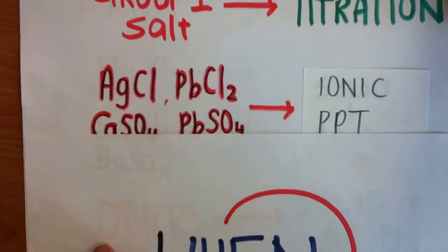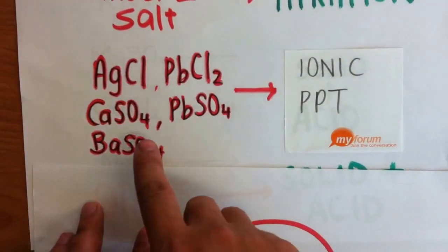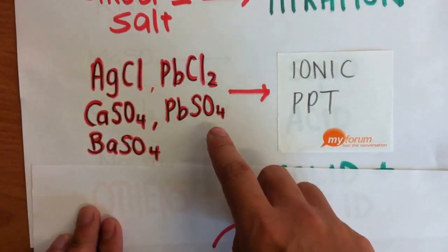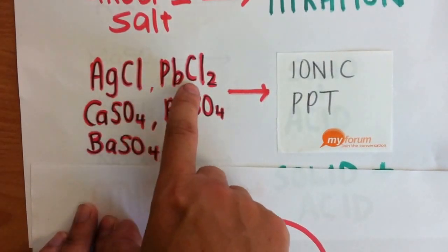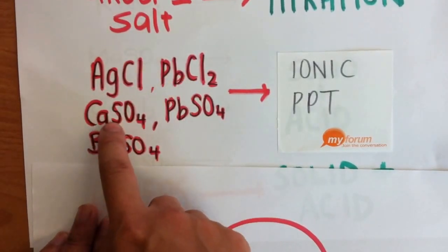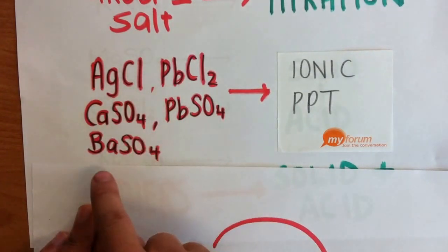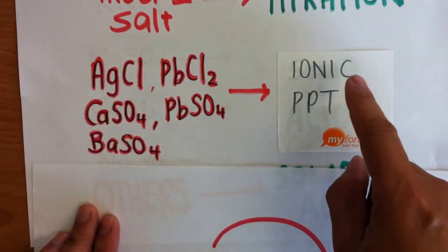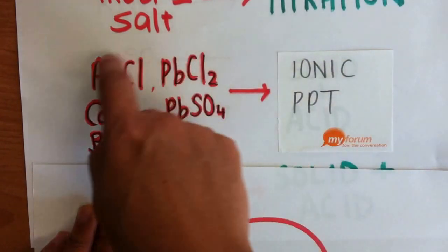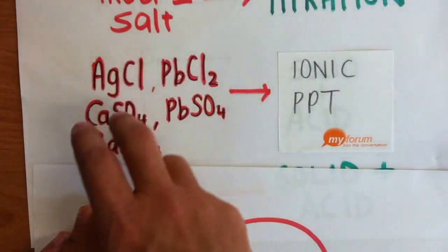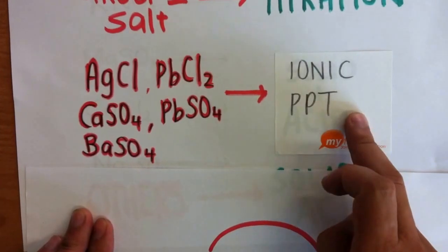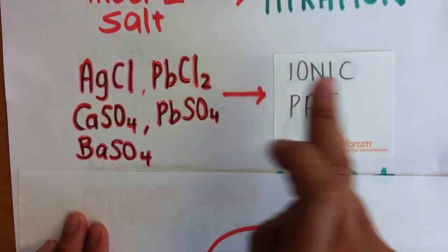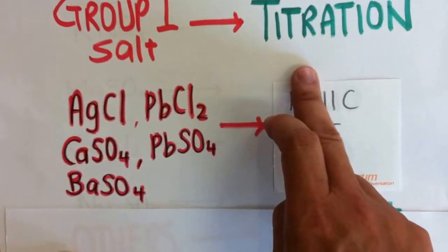When you are faced with these 5 insoluble salts — silver chloride, lead chloride, calcium sulfate, lead sulfate, and lithium sulfate — we use the method known as ionic precipitation. So these 5 salts, when they appear, only these 5, you use ionic precipitation. Group 1 salt: titration.